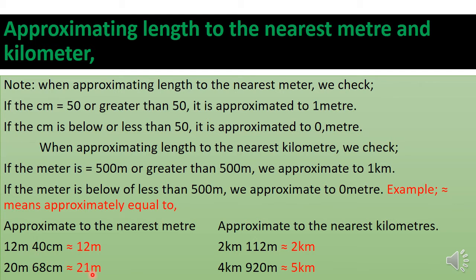For kilometers: 2 kilometers 112 meters — is 112 up to 500? No, so we approximate to zero kilometers, leaving us with 2 kilometers. Next: 4 kilometers 920 meters — 920 is more than 500, so we call it one kilometer. Adding one to four gives us 5 kilometers.